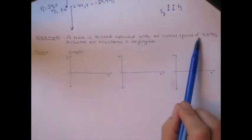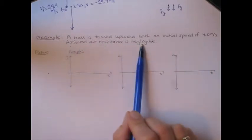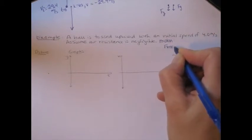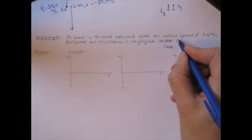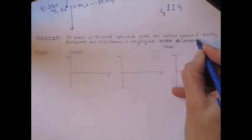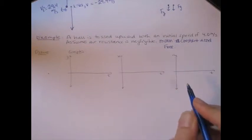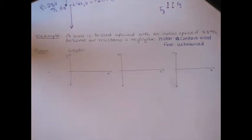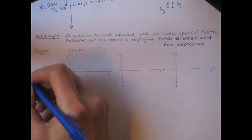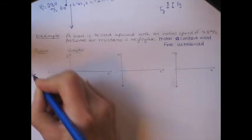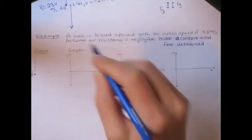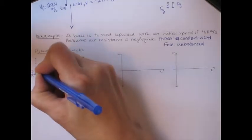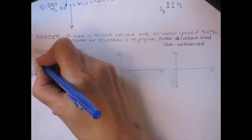A ball is tossed upward with an initial speed of 4 meters per second — assume air resistance is negligible. Right away we want to think about what is the motion model and force model that applies. This is going to be constant acceleration because it's free fall and the force is unbalanced. The next step is to draw a picture — a sketch of the physical situation. The ball is tossed upward and caught at the same height, so it goes up and comes down. It's always a good idea to sketch a motion map.